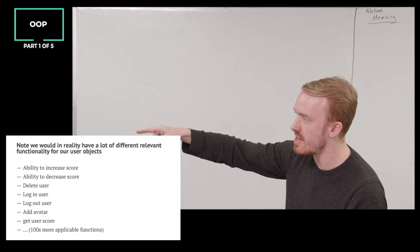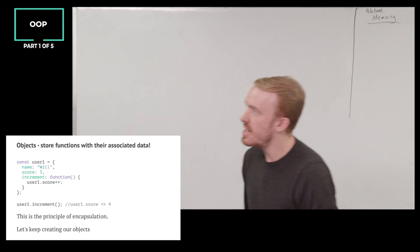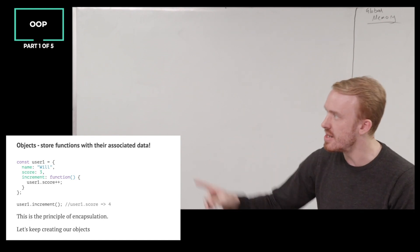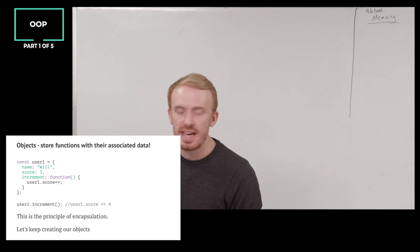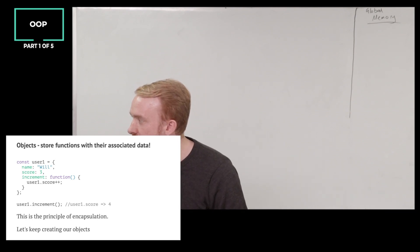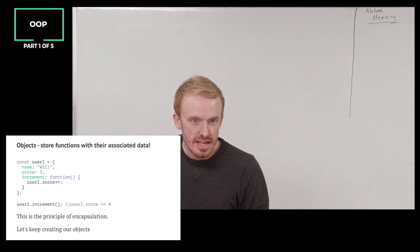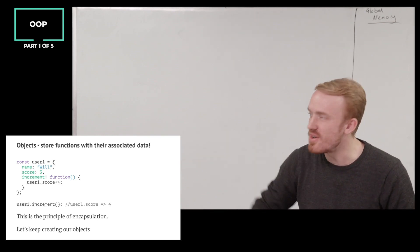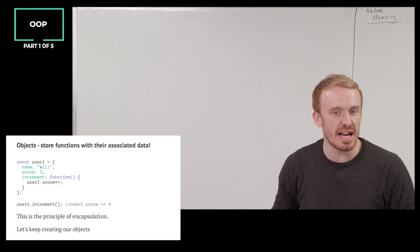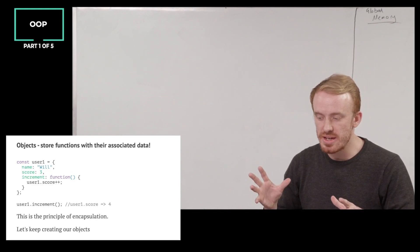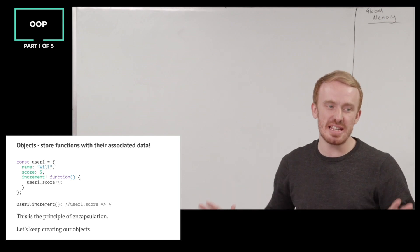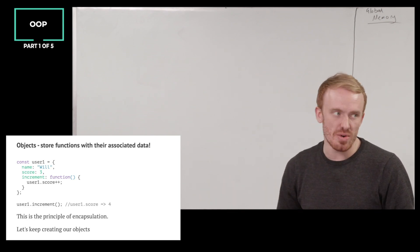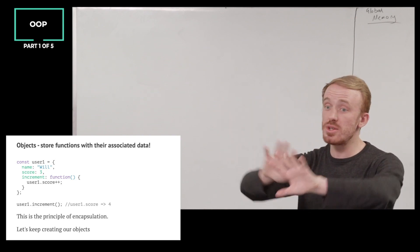Note that we can have a whole bunch of different relevant functionality in reality, hundreds of these different functions. But in essence, we are storing functions with their associated data on objects, so that we can do this thing here. Oh man, if we can do this thing here, we are so happy. If I can run my relevant function, in this case the ability to increment the score of my relevant data, the user1 score property, then I am so happy. This makes my code super easy for someone else to reason about. Where's the relevant functionality for this user object? Oh, don't worry. There it is, associated. And I can just run the function right to the right-hand side of the dot.